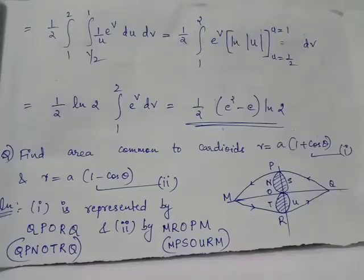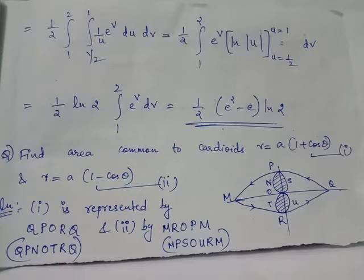Find the area common to the cardioids R equals A into 1 plus cos theta and R equals A into 1 minus cos theta.